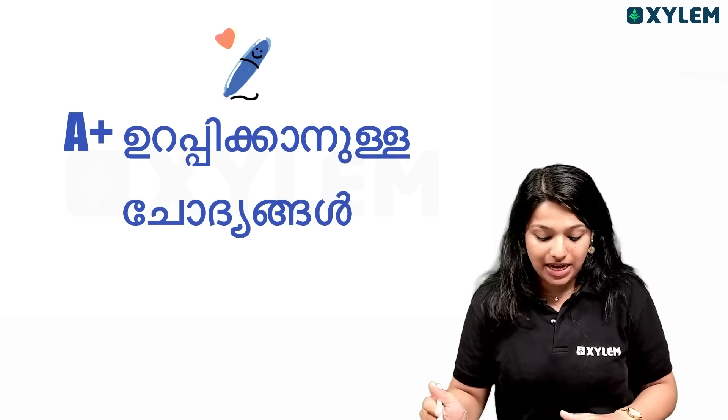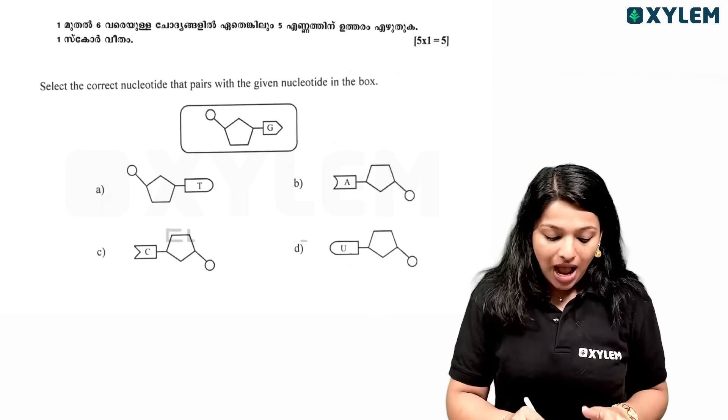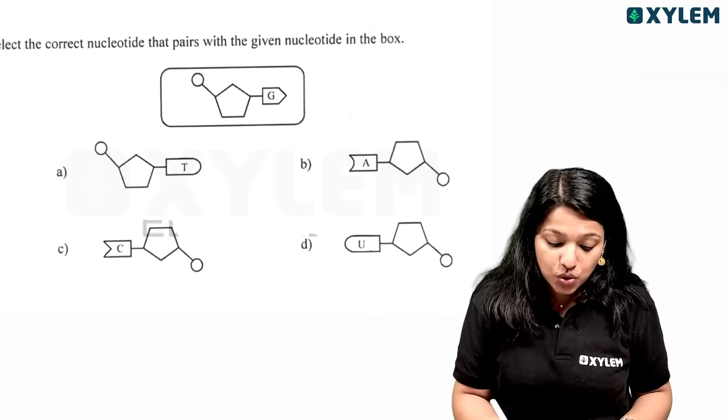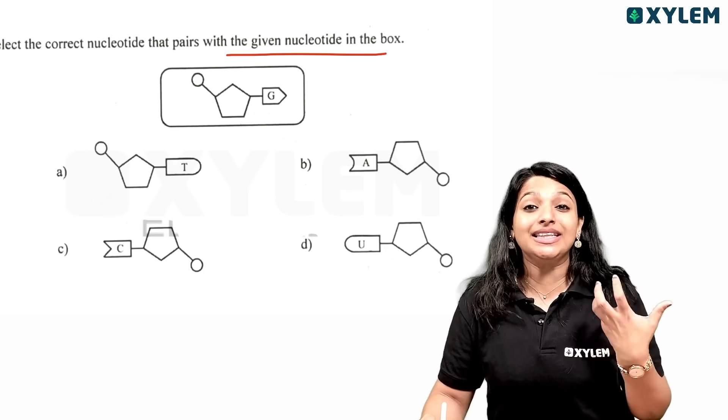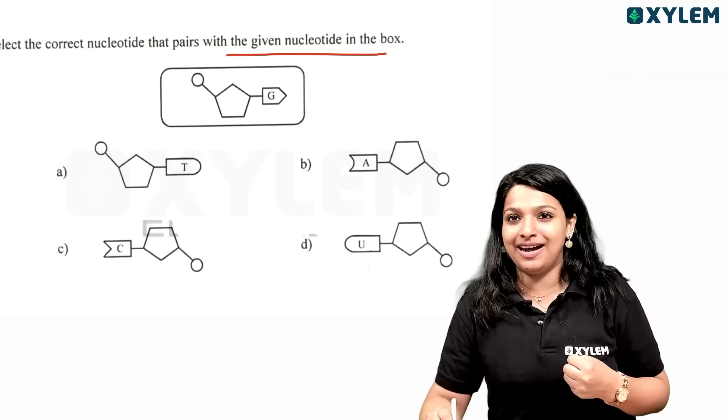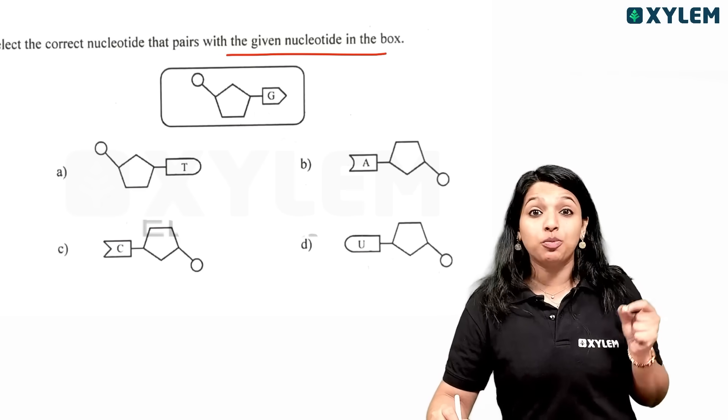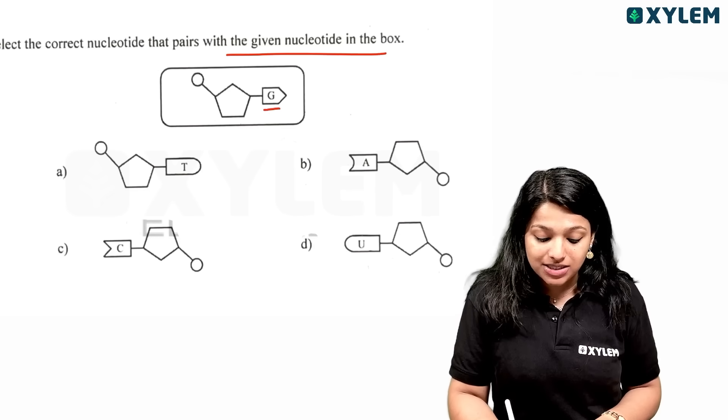Select the correct nucleotide that pairs with the given nucleotide in the box. Looking at the multiple choice question, the given nucleotide is guanine. The options are adenine, uracil, and cytosine.